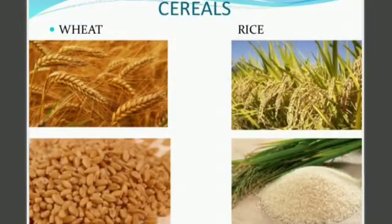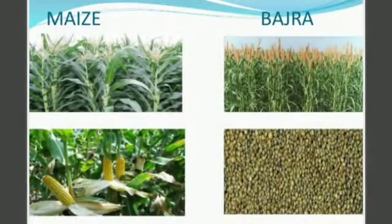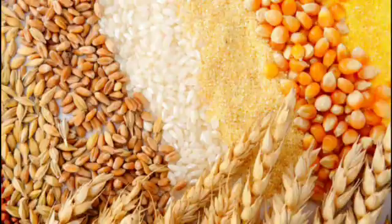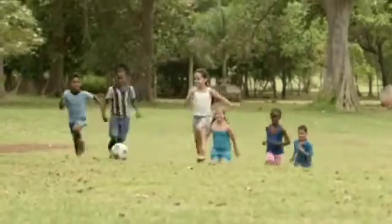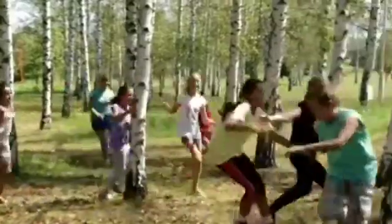Cereals like jowar, bajra, wheat and rice contain a lot of starch. We obtain flour from these grains. These grains form our staple diet. We get energy from starchy foods, and our body uses this energy for different kinds of work. This energy also keeps the body suitably warm.